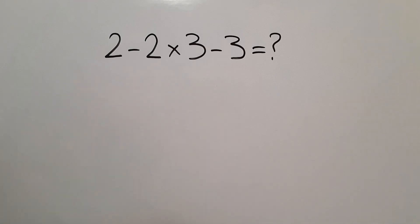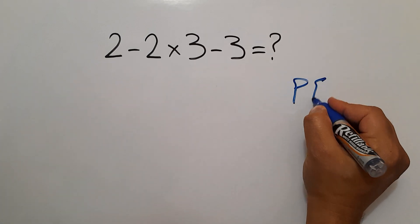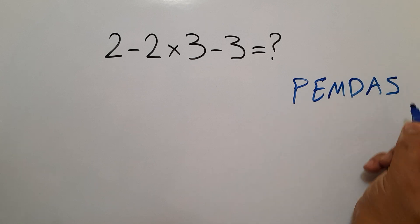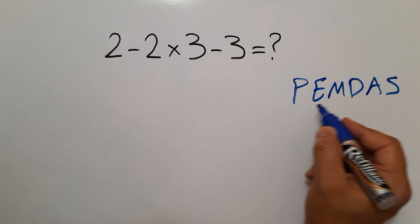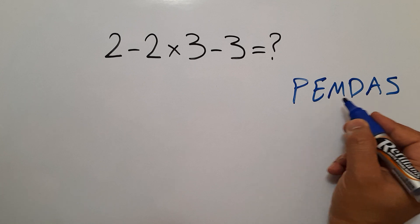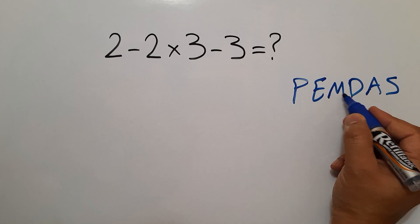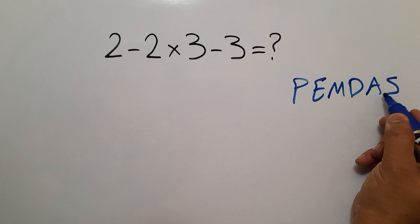PEMDAS: P stands for parentheses, E stands for exponents, M and D stands for multiplication and division, and A and S stands for addition and subtraction.